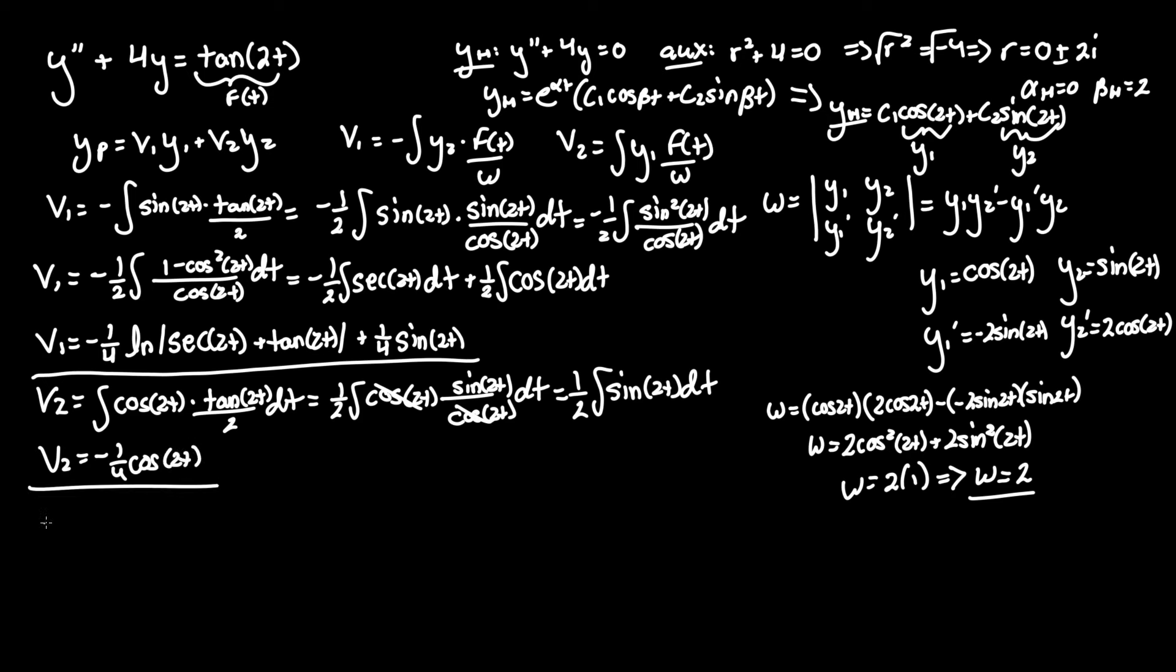Now before we write our general solution we still need to find the particular portion of that where we said it was v1 y1 plus v2 y2. So v1 was negative one fourth ln absolute value of secant 2t plus tan of 2t plus that one fourth sine of 2t. And this will be multiplied by y1 which we found to be cosine of 2t. Now we add that to v2 y2 where it's simply negative one fourth cosine of 2t times y2 which was sine of 2t. Now let's see if there's any way to simplify this. Obviously we got to leave the ln alone we can't do anything about that.